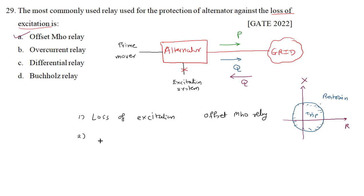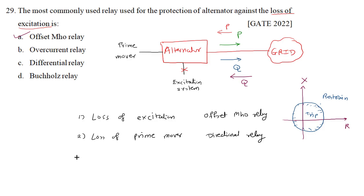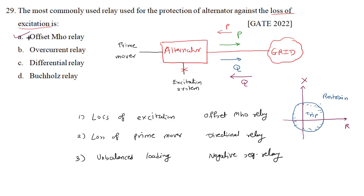Sometimes there might be a loss of prime mover. In that case, the alternator will still supply reactive power, but will take active power from the grid — a reversal of active power flow — and we use a directional relay to detect loss of prime mover. For unbalanced loading, there will be flow of negative sequence current, and we use a negative sequence relay to detect that condition. The correct answer is option A — offset mho relay.